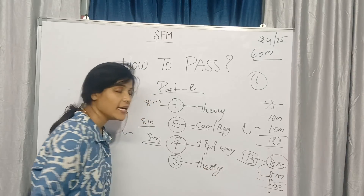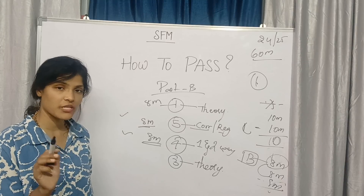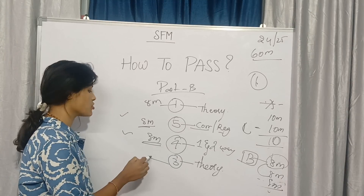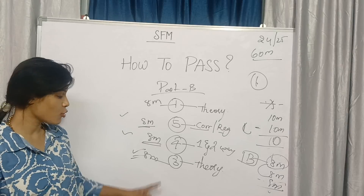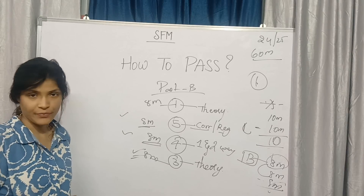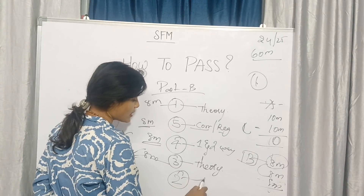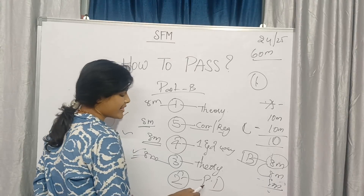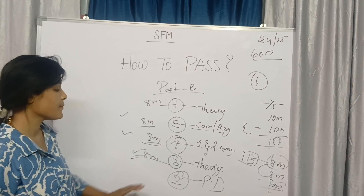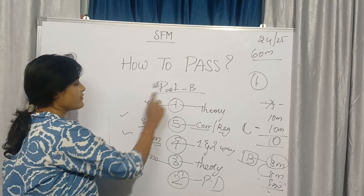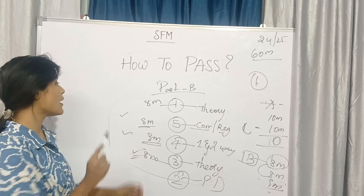After completing Unit 4, go to Unit 3 — prepare theory only for Unit 3. There is one theory question I have explained in the explanation video; that question will definitely come in the examination about sampling. Then give reference to Unit 2, which is Poisson distribution — whether it comes in the examination or not, it is the least priority choice.